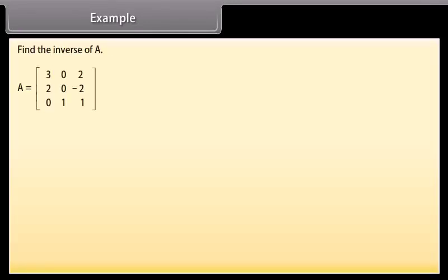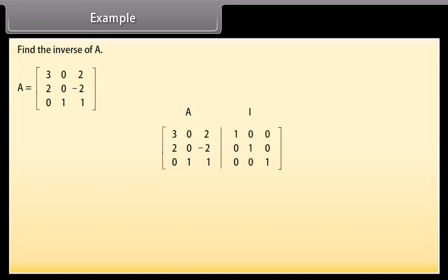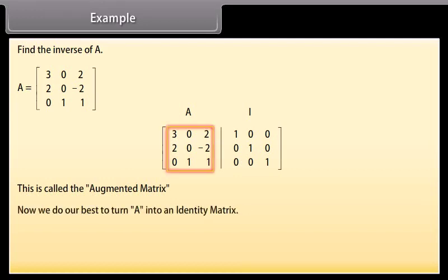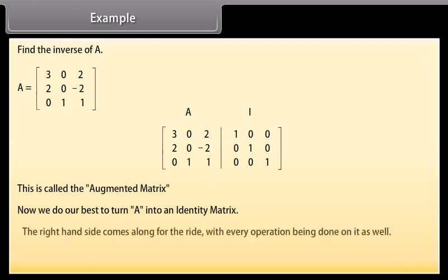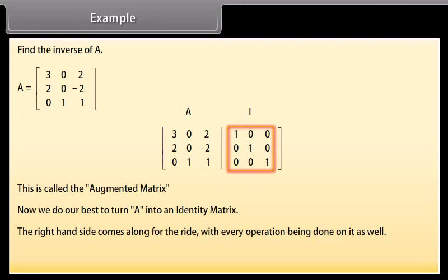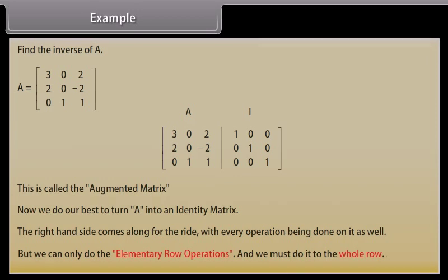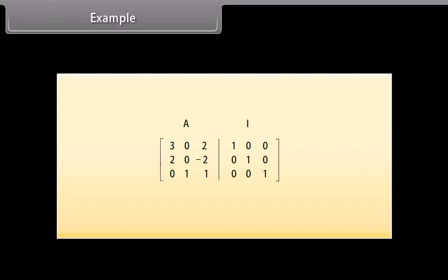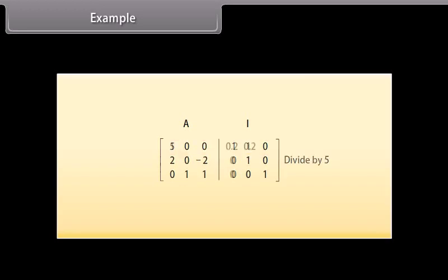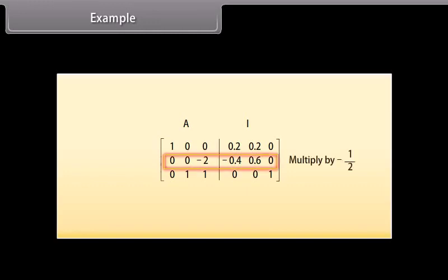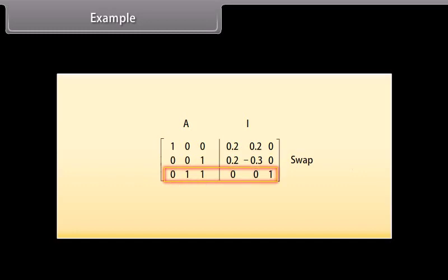Find the inverse of A. We start with matrix A and write it down with an identity matrix I next to it — this is called the augmented matrix. We do our best to turn A (the matrix on the left) into an identity matrix, and the right-hand side comes along with every operation being done on it as well. We can only do elementary row operations and must do them to the whole row. In this example: first, add row 2 to row 1; then divide row 1 by 5; then take 2 times the first row and subtract it from the second row; multiply the second row by -1/2; swap the second and third row; lastly, subtract the third row from the second row. And we are done.